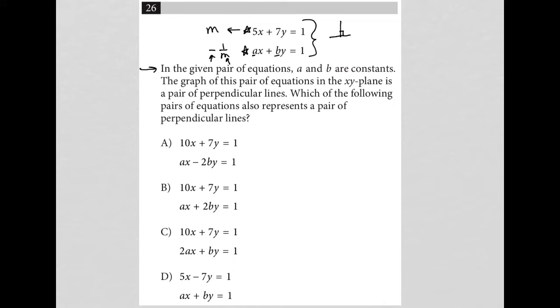The next part of the question says, which of the following pairs of equations also represents a pair of perpendicular lines? In each of these answer choices, I have an equation with actual coefficients in front of x and y. It looks like A, B, and C are all 10x plus 7y equals 1, and choice D is 5x minus 7y. For all the options, I also just have A and B in the second equation. That tells me I need to know what A and B are.